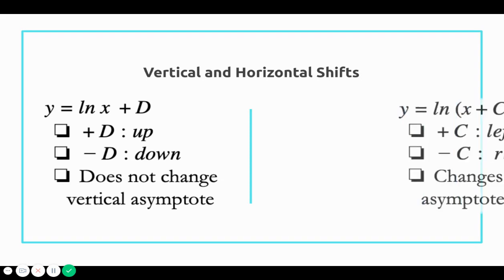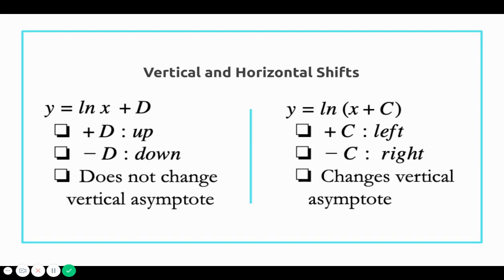In contrast, when you have y equals natural log of x plus c — where x and c are both inside the log — a plus c moves the function to the left, and a minus c moves it to the right. The horizontal shift is the opposite of what you might expect. And this horizontal shift does change the vertical asymptote.